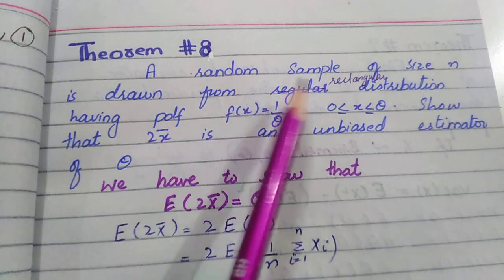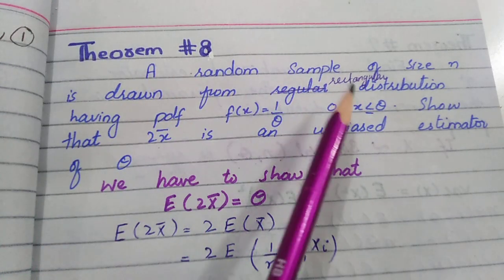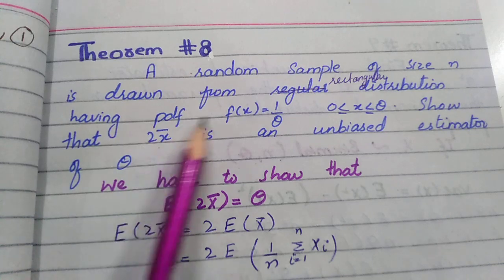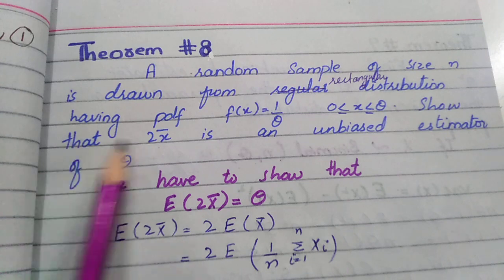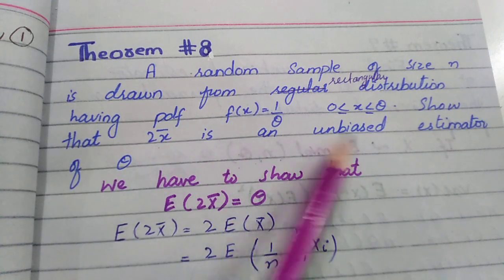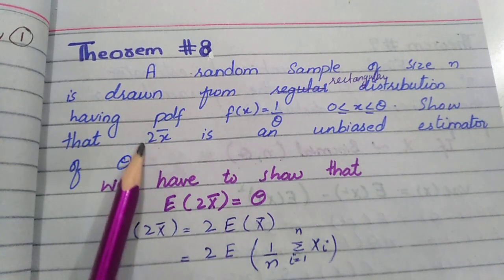Now we have Theorem 8, which states that a random sample of size n is drawn from a rectangular distribution having pdf p(x) = 1/θ. We have a pdf which shows that 2x̄ is an unbiased estimator of θ, meaning that if we take the expected value then it should be equal to θ.